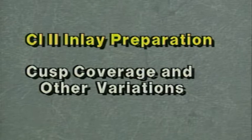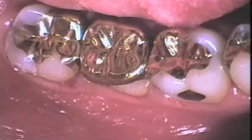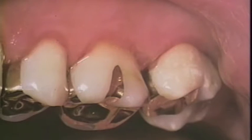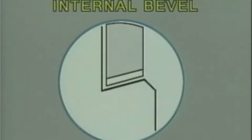We can cover one cusp, cover all cusps, add retentive pins, or a bale. One of the variations in the Class 2 cavity is the internal bevel we place on the MO or DO preparation, particularly on premolars.